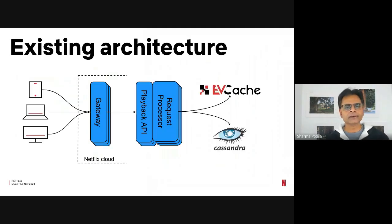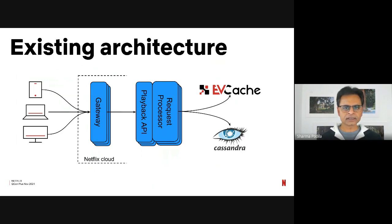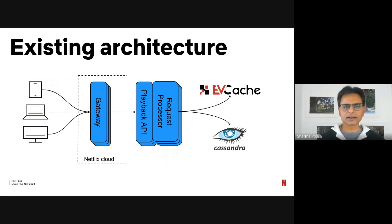So what motivated us to embark on this journey? Let's look at our existing system at the time. At a high level, we have Netflix clients on devices such as mobile phones, computers, laptops, and TVs, sending data during playback into the Netflix cloud. First it reaches the gateway service, then goes to the playback API, which manages the lifecycle of playback sessions. In addition, it sends playback data into the request processor layer, which stores both short-term and long-term viewing data into persistence — Cassandra — and also into a caching layer — EVcache — which enables really quick lookups.